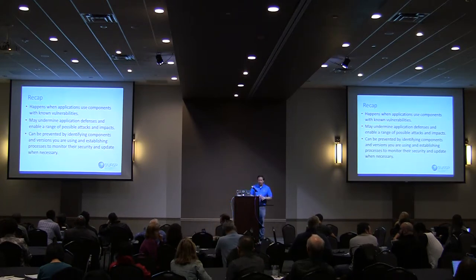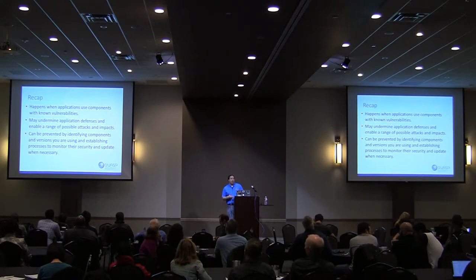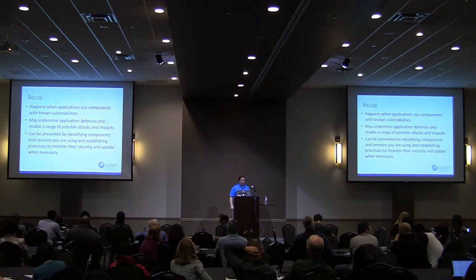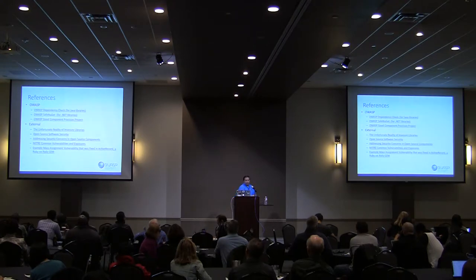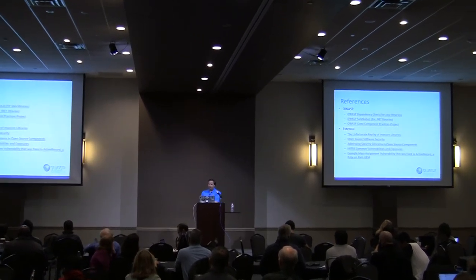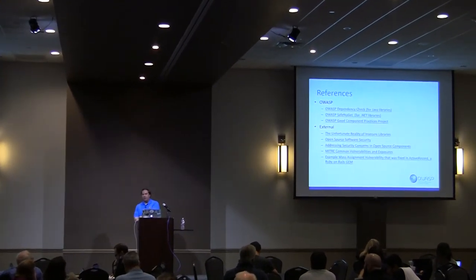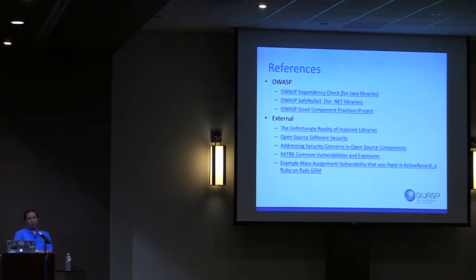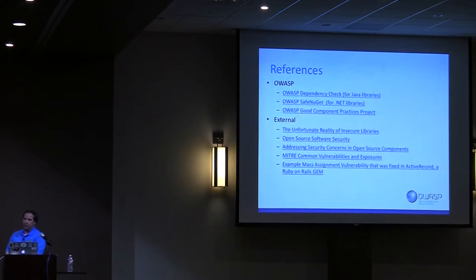To recap: this vulnerability happens when an application uses components with known vulnerabilities. It may undermine application defenses and enable a range of attacks. Prevention involves identifying components and versions you're using, establishing processes to monitor their security and update when necessary. OWASP Dependency Check and tools like RetireJS for .NET libraries can help, along with OWASP component good practices.